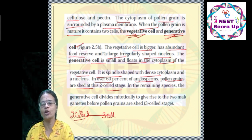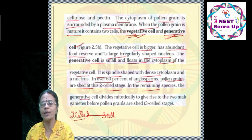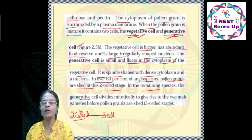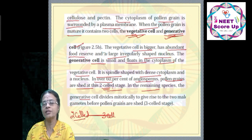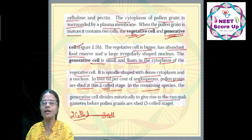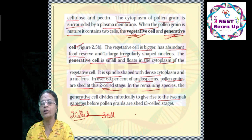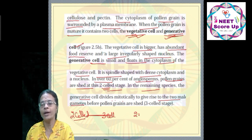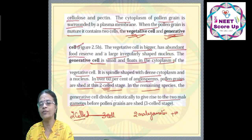In the remaining species, the generative cell divides mitotically to form two male gametes. So the two-cell stage consists of one vegetative cell plus one generative cell, while the three-cell stage consists of two male gametes plus one vegetative cell.